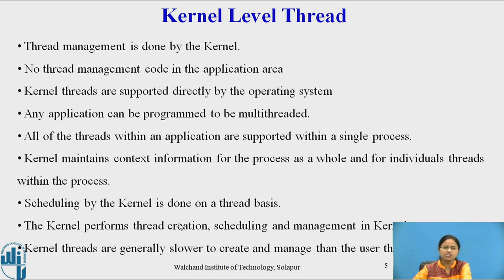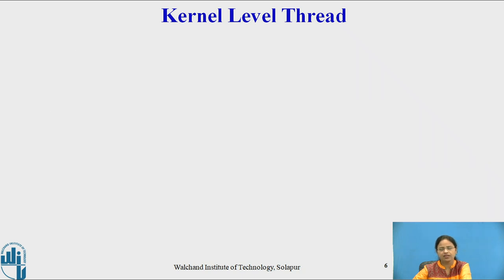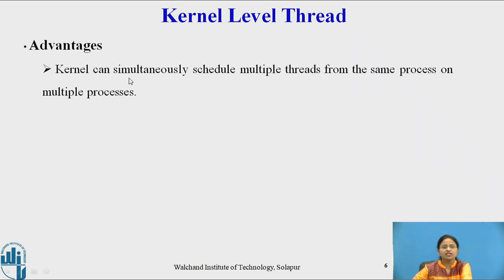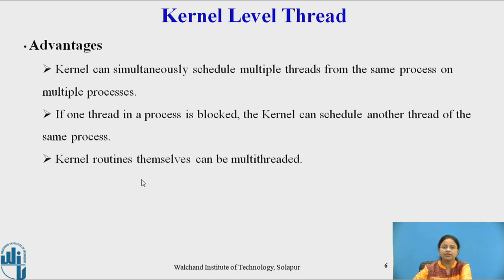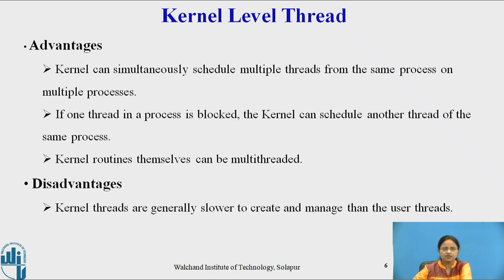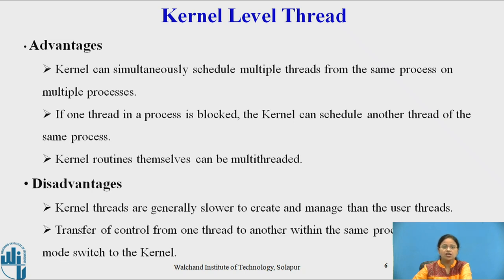The kernel performs thread creation, scheduling, and management in kernel mode. Kernel threads are generally slower to create and manage than user level threads. The advantages of kernel threads are: the kernel can simultaneously schedule multiple threads from the same process on multiple processors. If one thread in a process is blocked, the kernel can schedule another thread of the same process, so the system doesn't block. Kernel routines themselves can be multi-threaded. The disadvantage is that kernel threads are slow to create and manage because the operating system takes part in their creation. Transfer of control from one thread to another within the same process requires a switch from user mode to kernel mode.